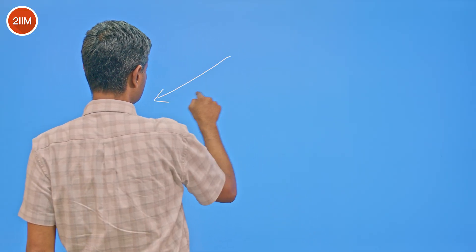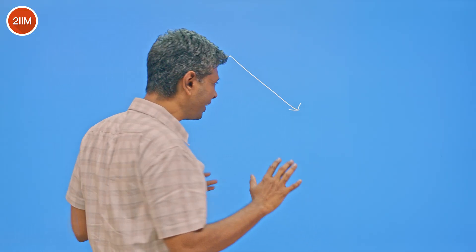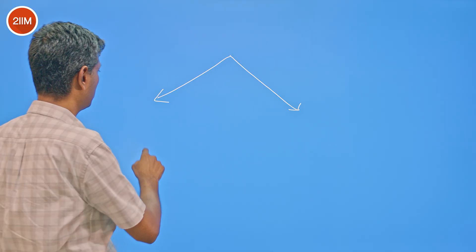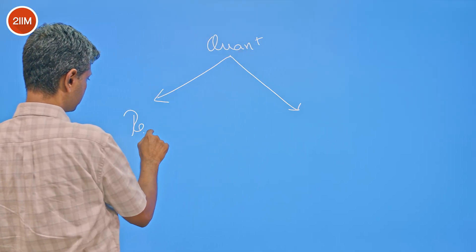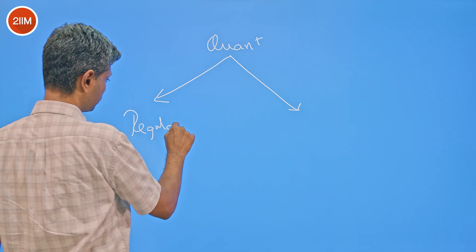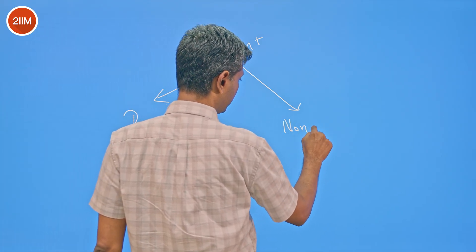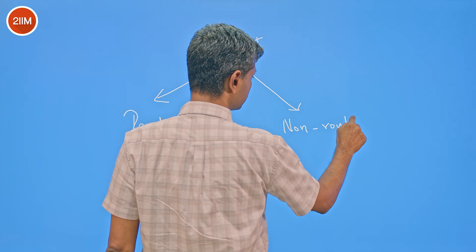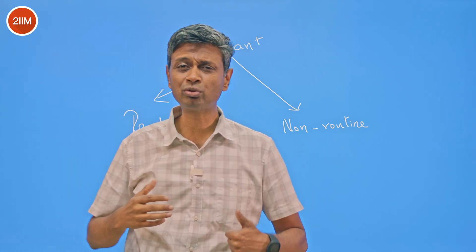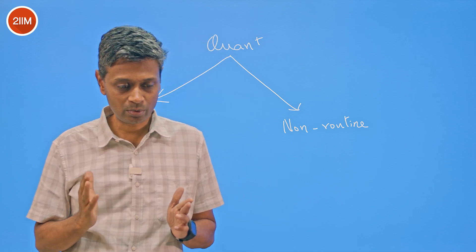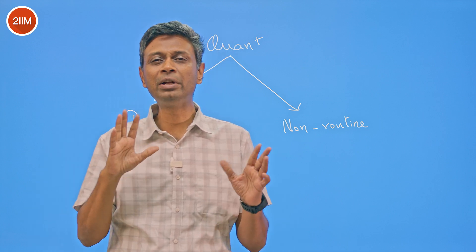In my mind, there are three important skill sets built around how to approach quant papers. Typically, a quant paper has two kinds of questions — for want of a better word, I'm going to say regular questions and slightly non-routine. Regular questions are questions on a kind of familiar structure.